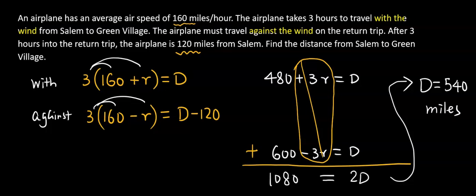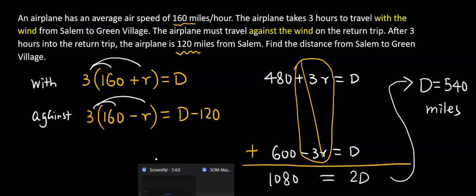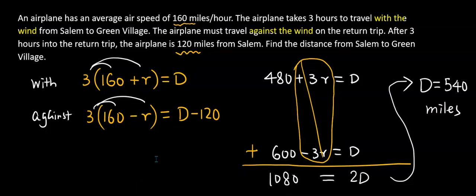And d is distance, distance is 540. Don't forget the unit is 540 miles. That's it, that's how we solve this problem which involved with the wind against the wind. Happy learning.